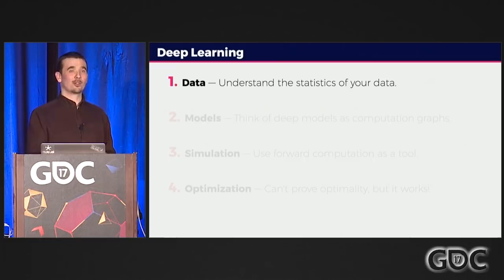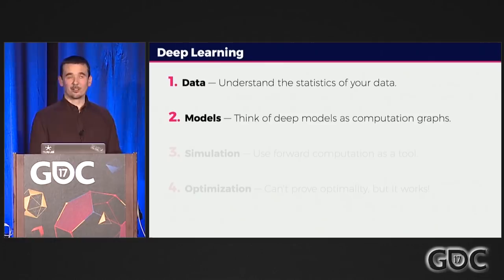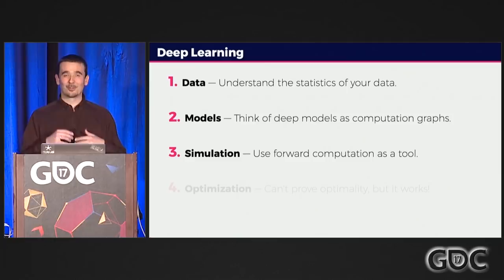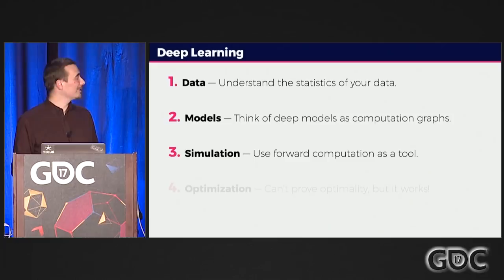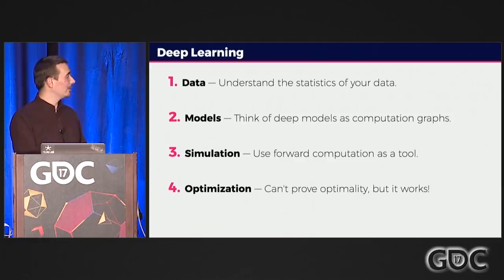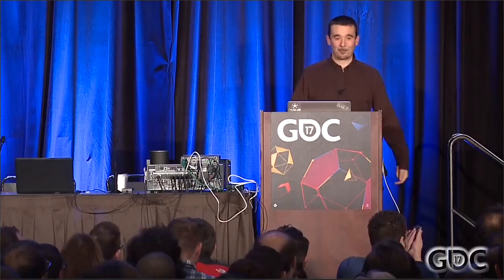To summarize: data is important, but it's more important to understand the statistics of your data — make sure it's well distributed across all your output categories and input space. The models in deep learning have progressed way beyond neural networks and biologically inspired models; they're general computation graphs you can integrate into your software. Making architectures is difficult, but you can get away with doing lots of simulations and seeing which ones work best. From the optimization perspective, you can't guarantee convergence for sure, but in practice it always does, and modern deep learning libraries are very reliable. Thank you very much.